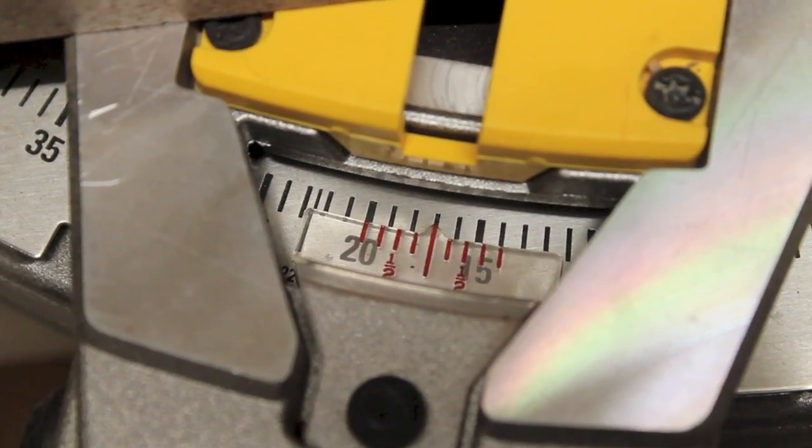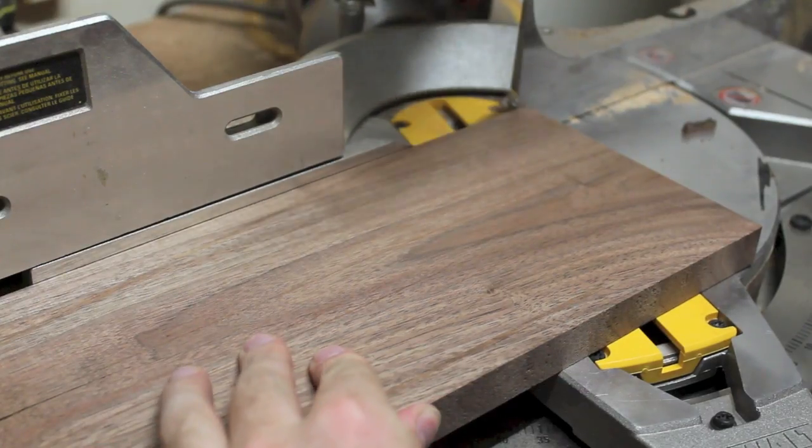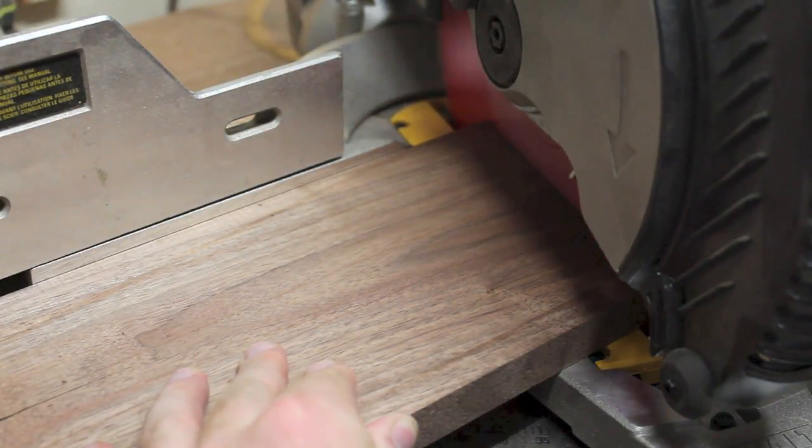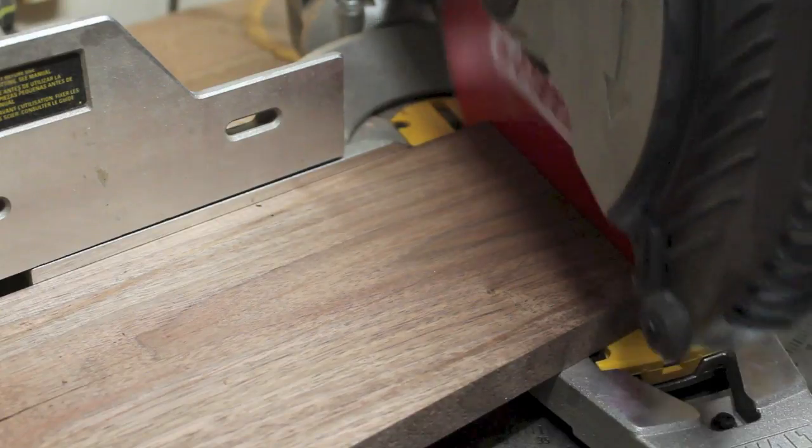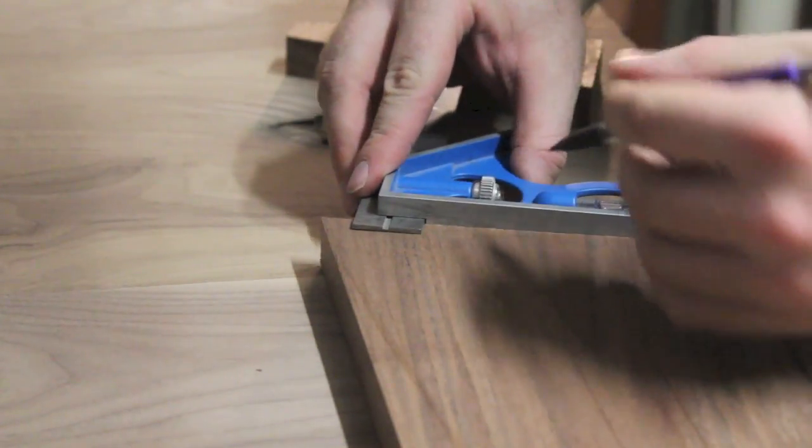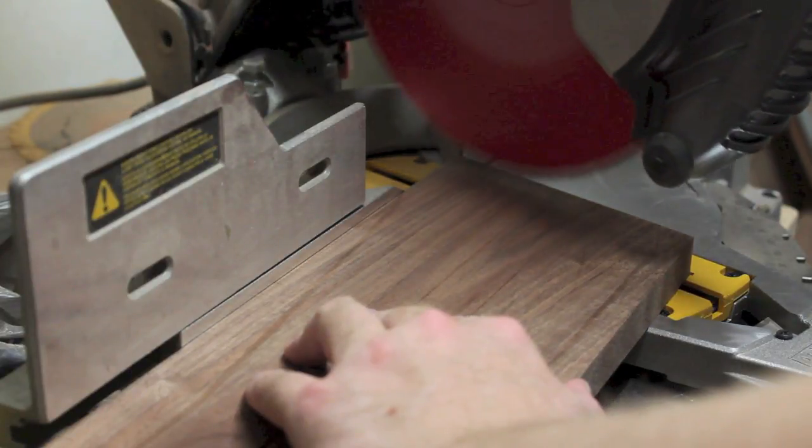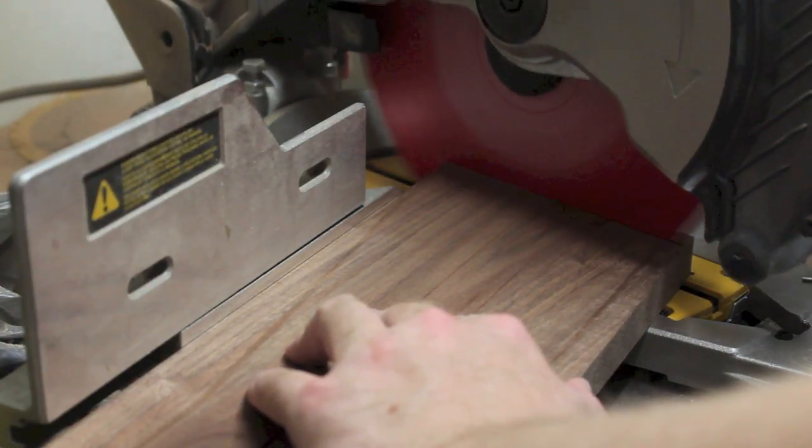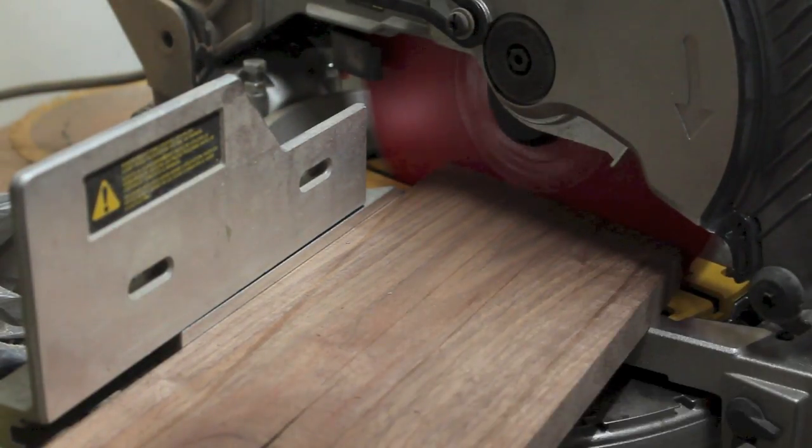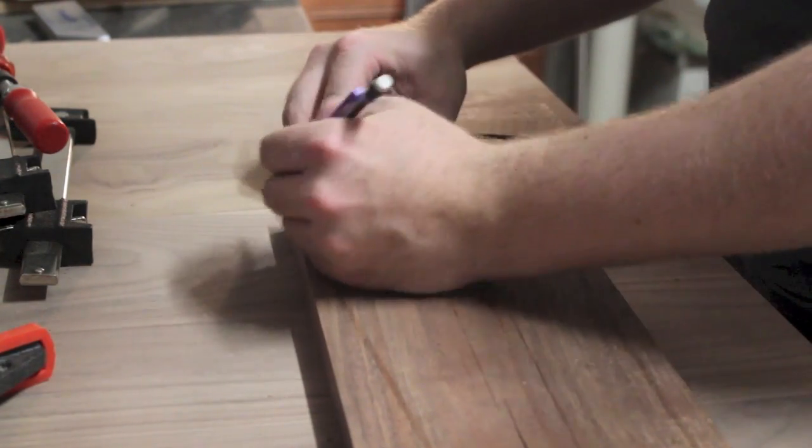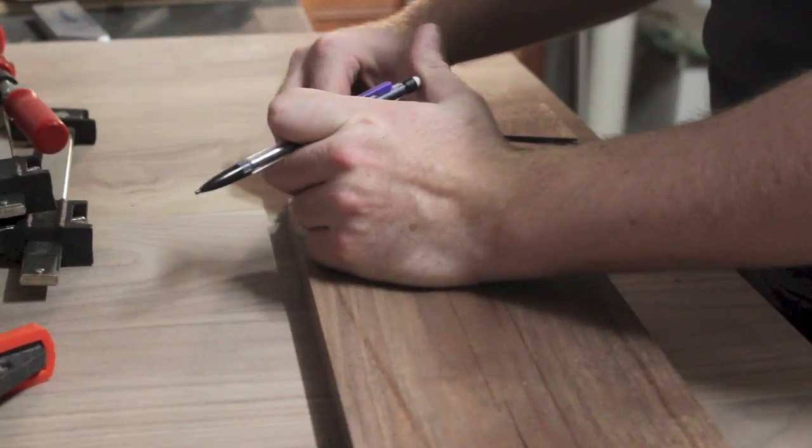I marked in one inch from one end of the board and made a cut at 17 degrees on the miter saw. Then I marked in three eighths of an inch from the end of the board and made another cut at 17 degrees. I made the same cut one more time, marking three eighths of an inch and then cutting at 17 degrees on the miter saw.